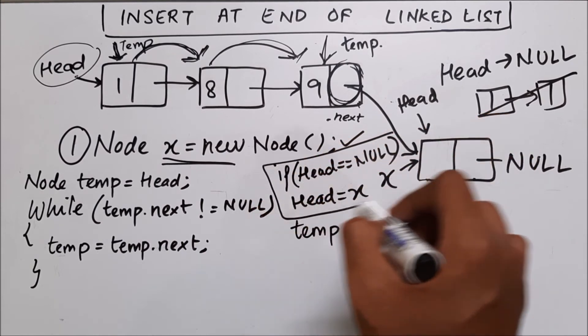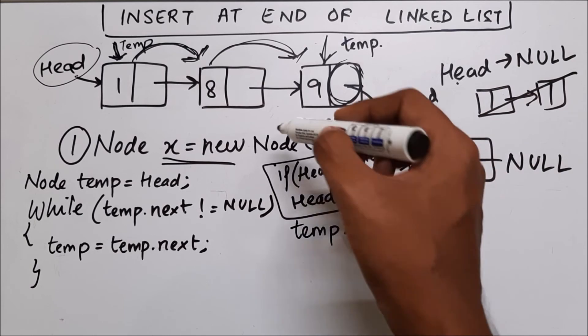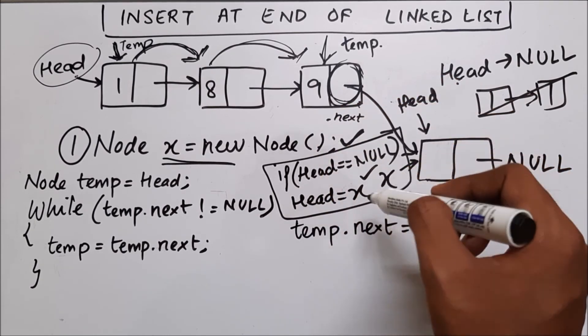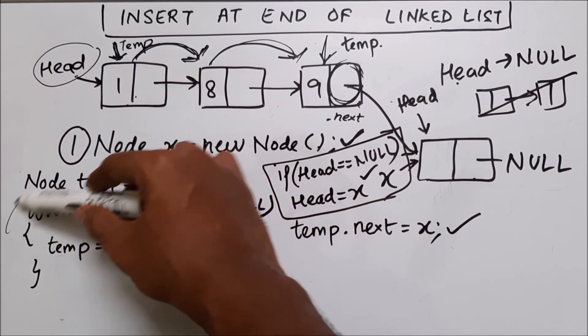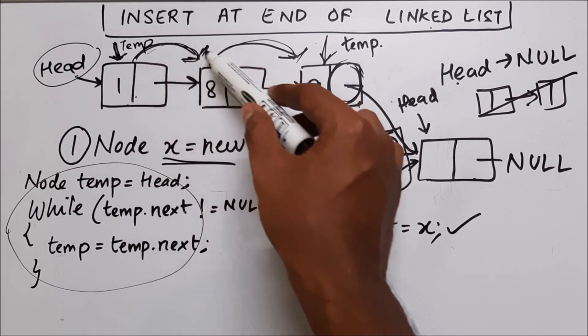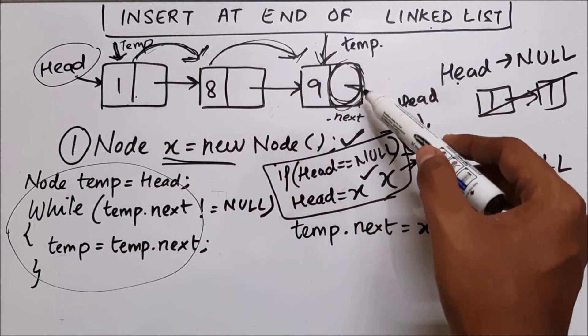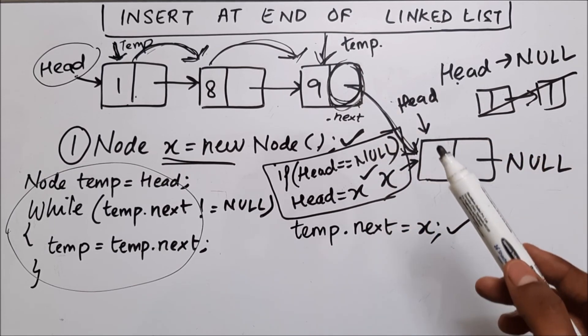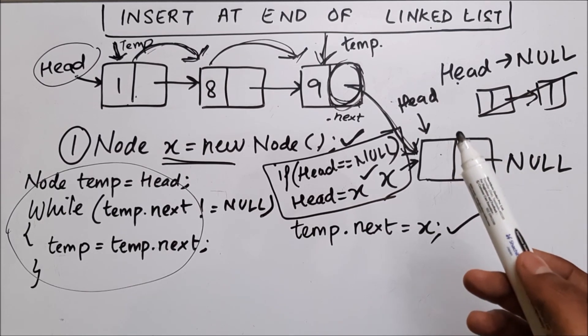If there is no element in the linked list, we will create a node and make that node as the first node. In case this linked list is not empty and it has many nodes, you will use this approach. That is to traverse to the last node. And in this last node's address part, we are going to put the address of the new node.